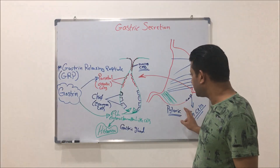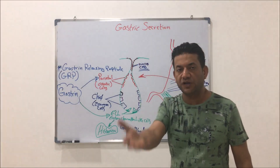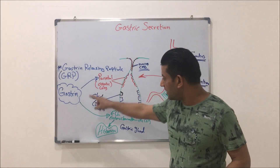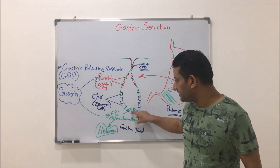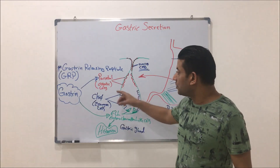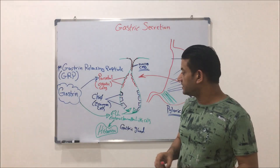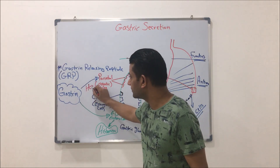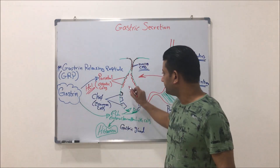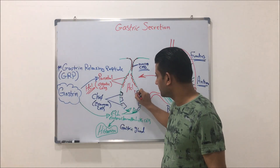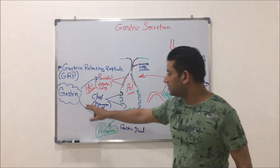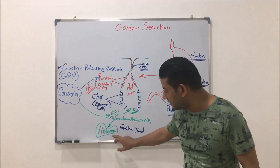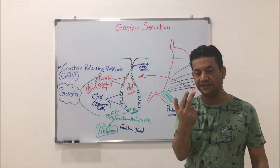From G cells, gastrin will circulate within the blood and will target the parietal cells in the gastric gland and enterochromaffin-like cells in the gastric gland too, causing the parietal cells to secrete HCl. It will also directly act on enterochromaffin-like cells, causing them to secrete histamine, which is the second factor.